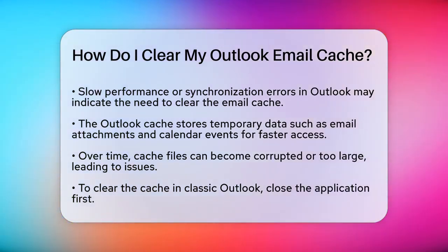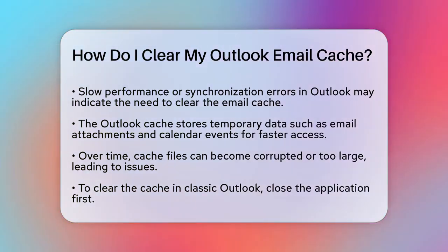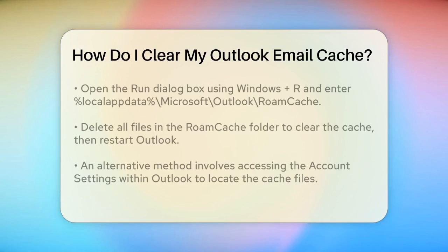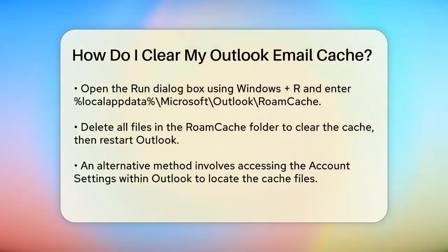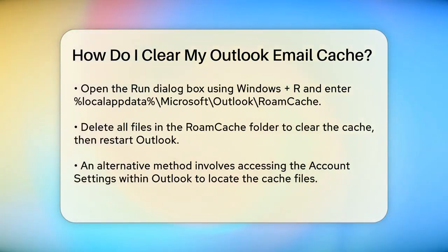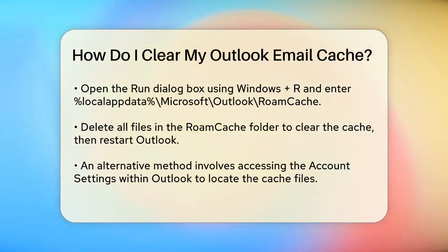This will open the RoamCache folder, where you'll find the cache files associated with your Outlook profile. Select all files in the folder by pressing Ctrl+A, and then press the Delete key, or right-click and choose Delete. After clearing the cache, restart Outlook and it will rebuild the necessary cache files from scratch.